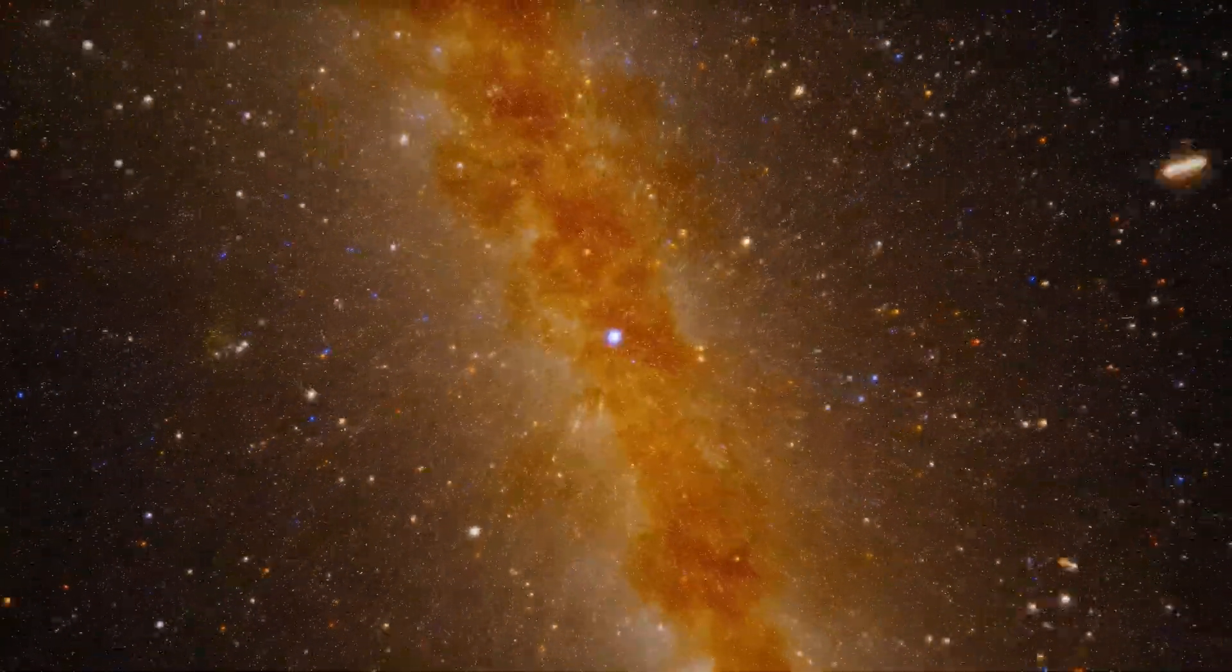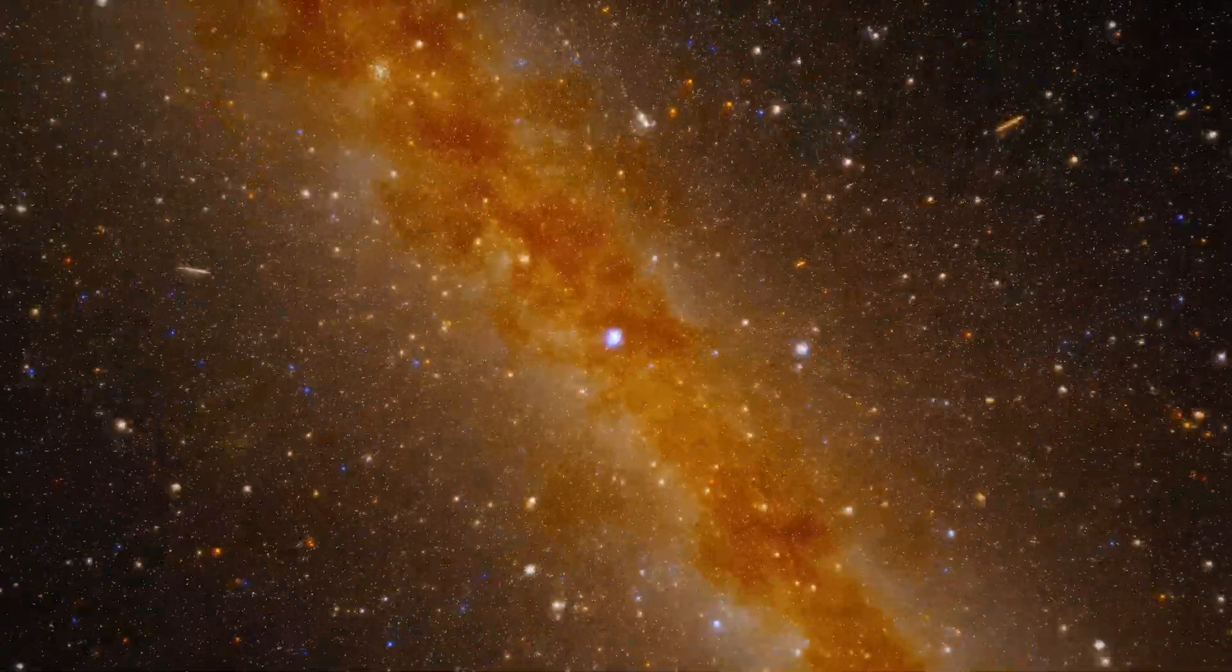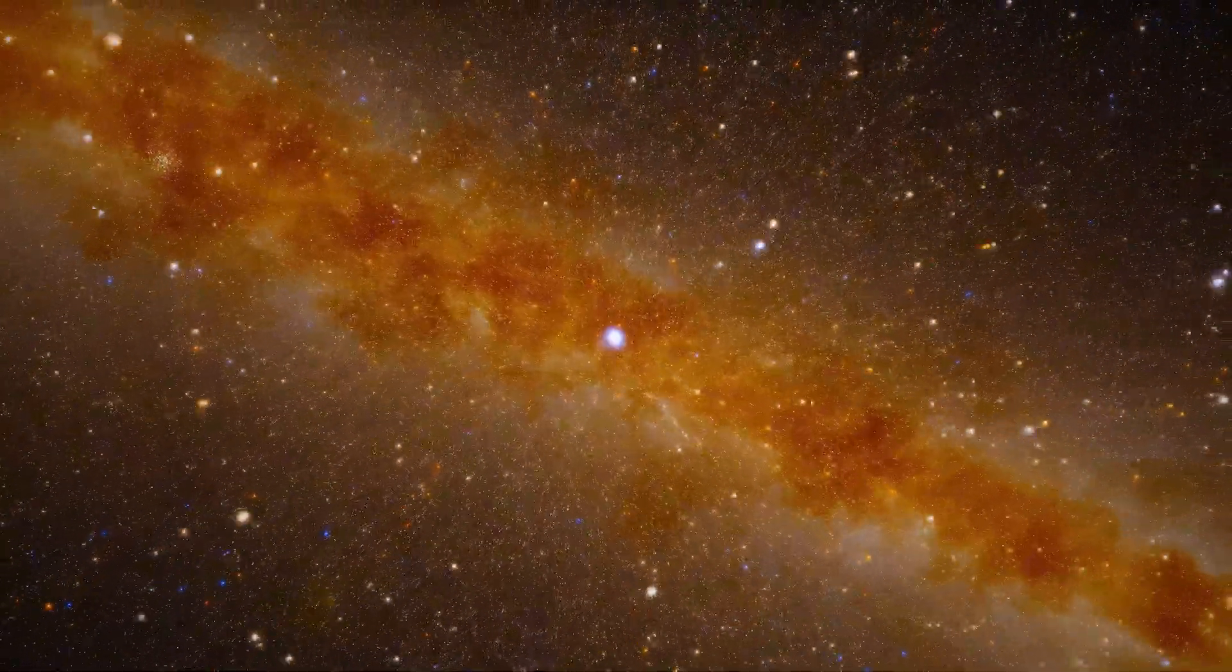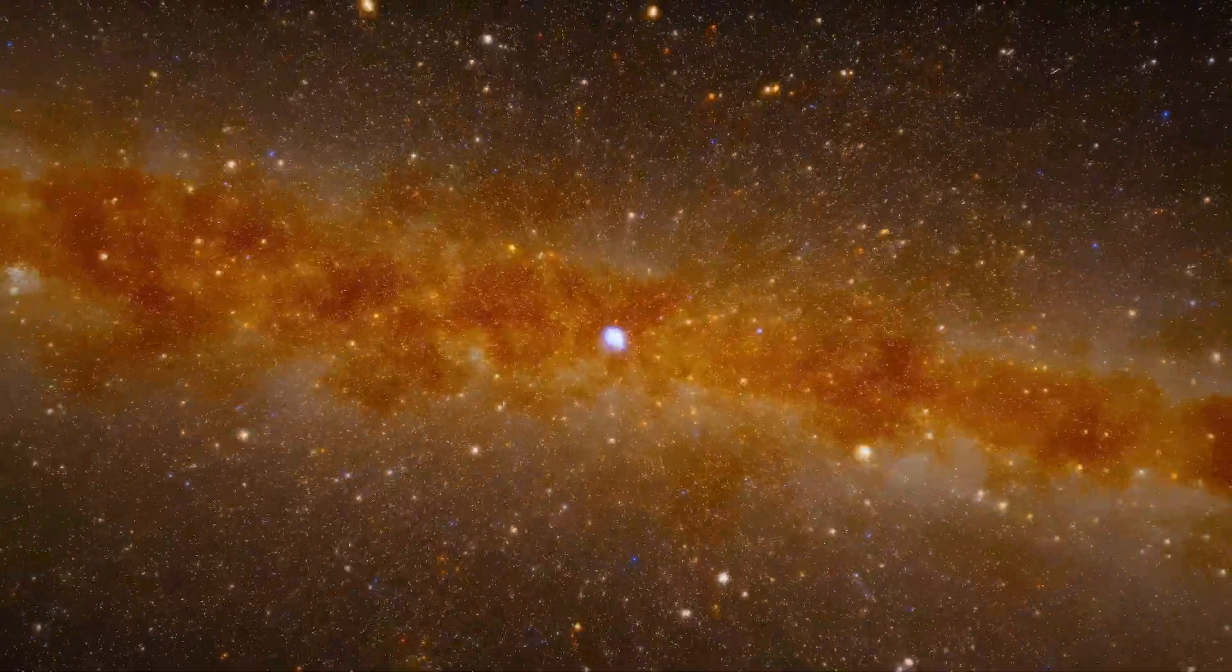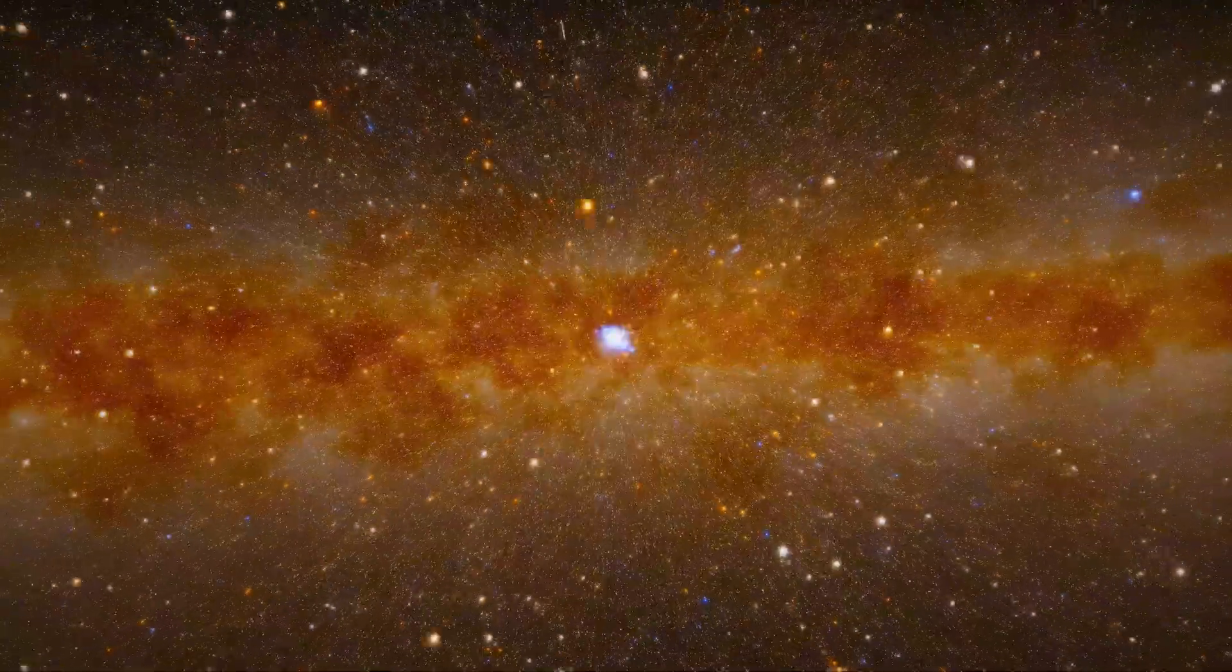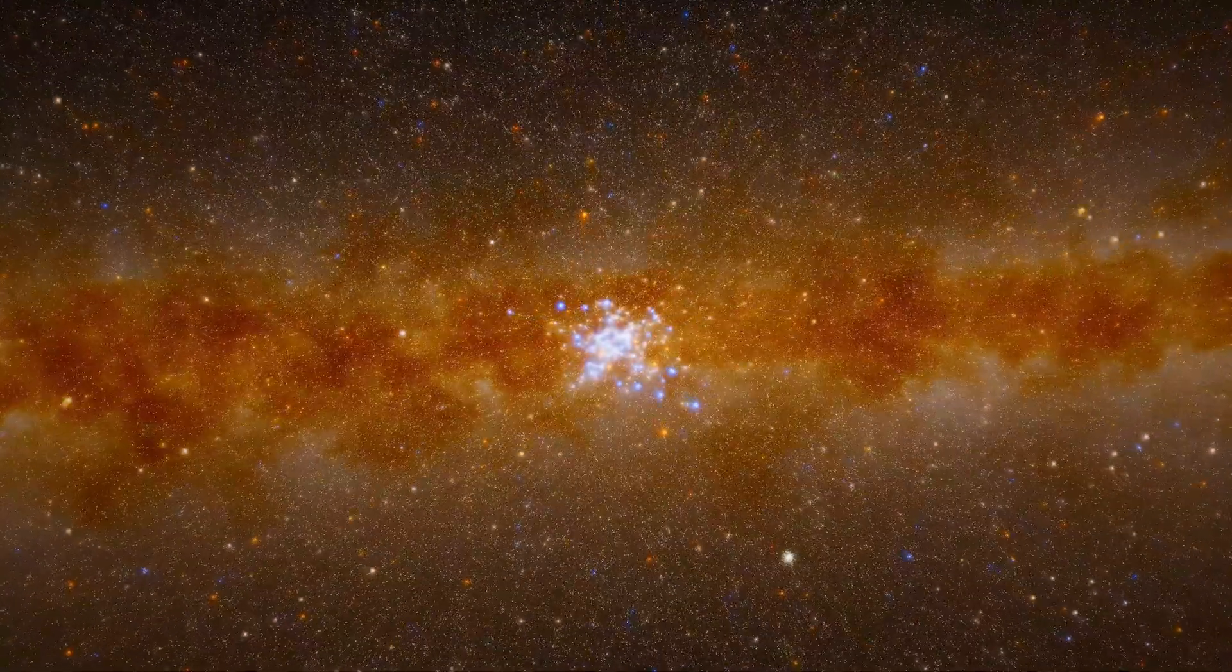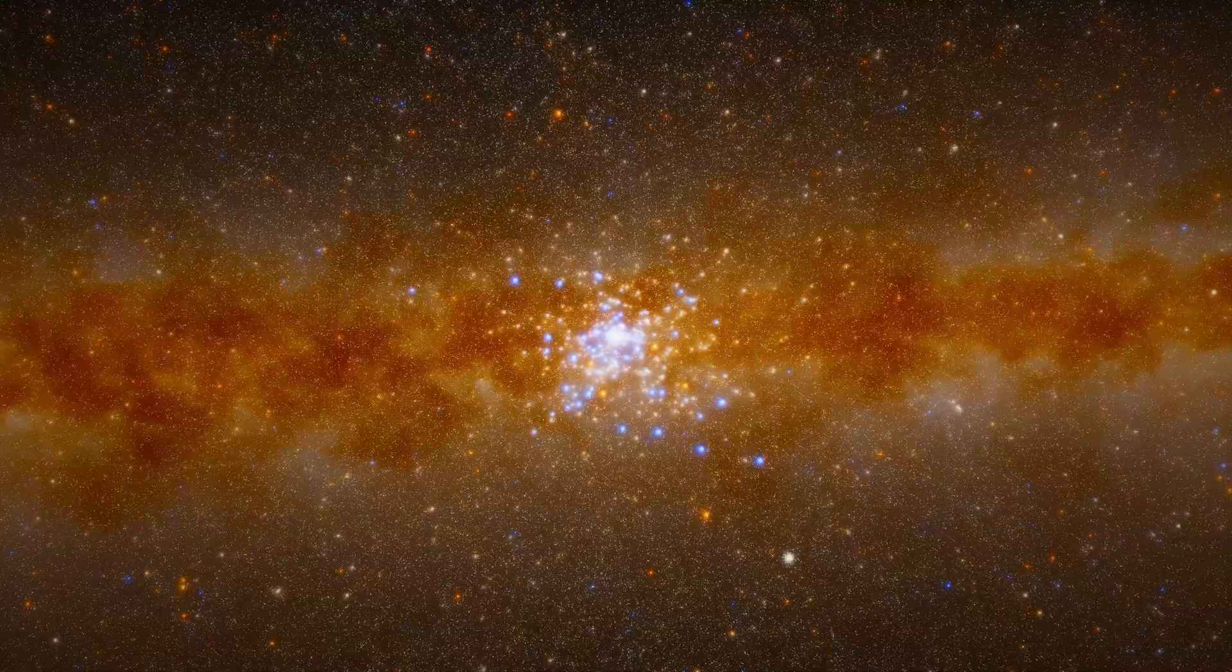The Milky Way's bulge isn't perfectly round. It's stretched into a bar shape, extending thousands of light-years from the core. From our position, we can see this bar stretching out ahead of us, packed with billions of old stars, all orbiting the center. Orbital periods are much shorter here, because stars are closer to the galactic center. Some complete an orbit in just a few million years, instead of the 230 million it takes our sun.